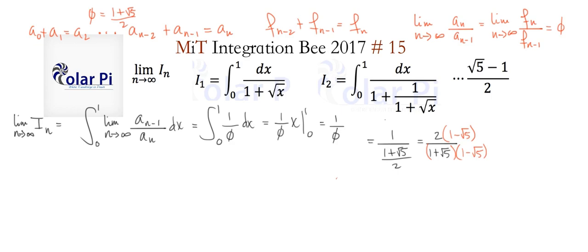And so in the numerator, we get 2 times 1 minus root 5. And in the denominator, we get difference of squares. So 1 squared minus root 5 squared, which is 1 minus 5, which is negative 4.